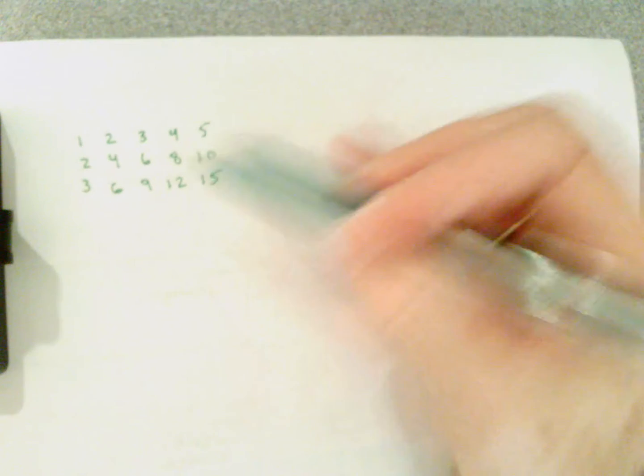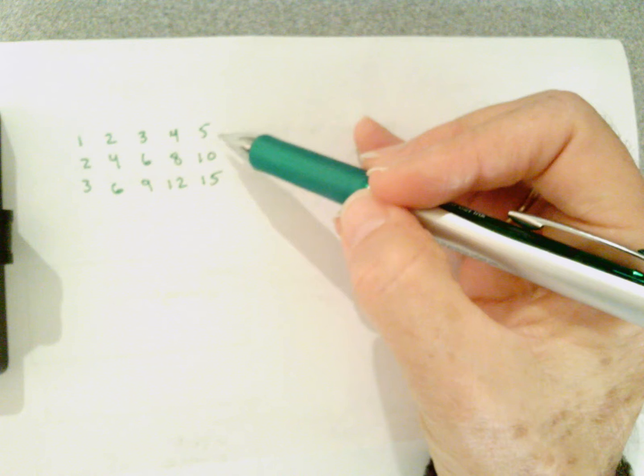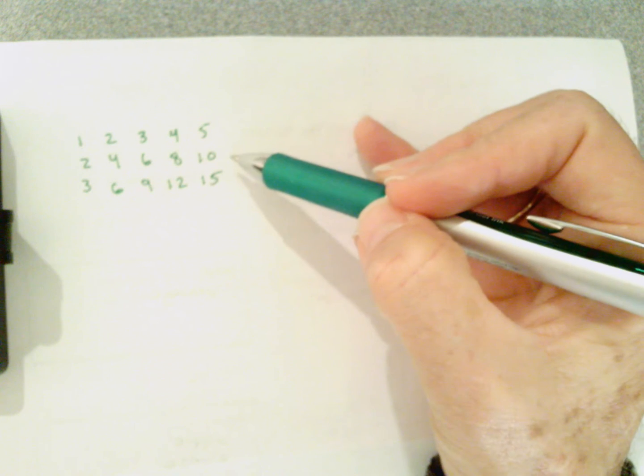In this video I'll show you how to write a nested loop. So let's say that we want to print out these values: one two three four five on the first row, two four six eight ten on the second row, three six nine twelve fifteen on the third row.